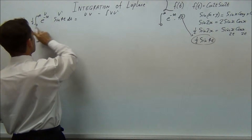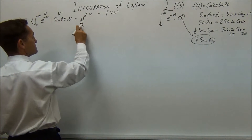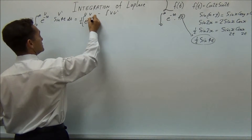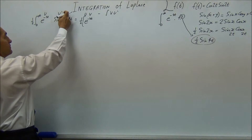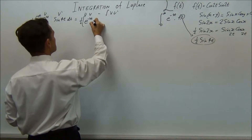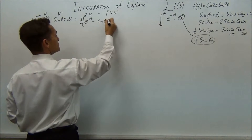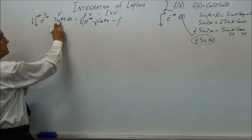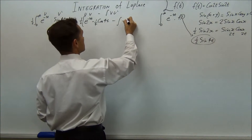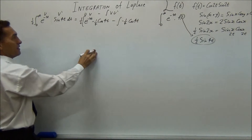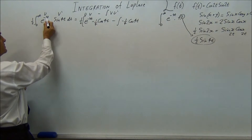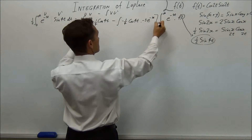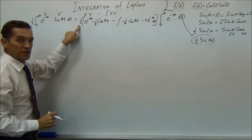So u stays as e to the minus st, and we keep the half out front surrounding the whole integration. For v, we integrate sin 4t: integrating sin gives minus cos, so we get minus cos 4t over 4. Then for the integral of v·u dash: v is minus cos 4t over 4, and differentiating u gives minus s·e to the minus st. So v·u dash is minus a quarter cos 4t multiplied by minus s·e to the minus st, all surrounded by that half, with dt.